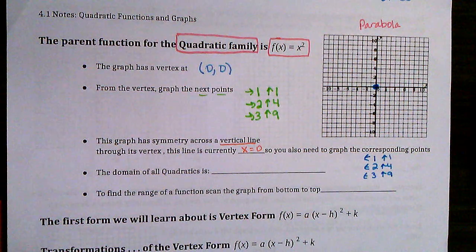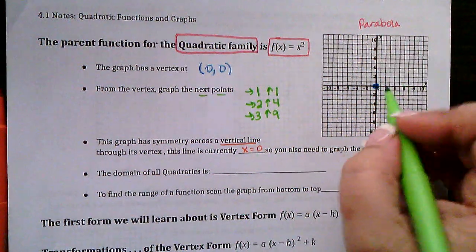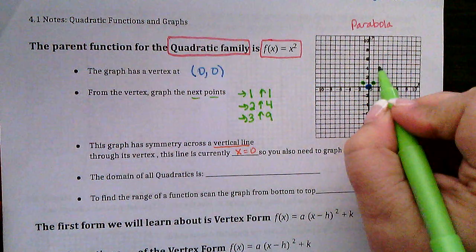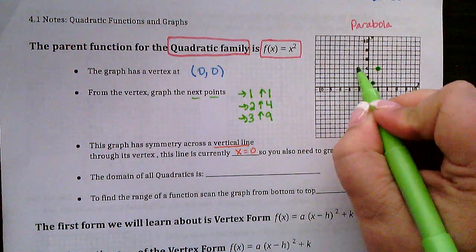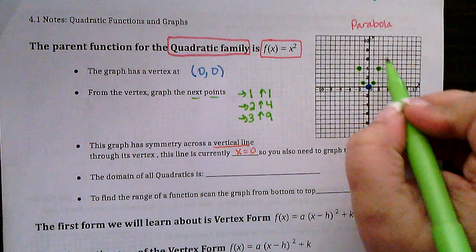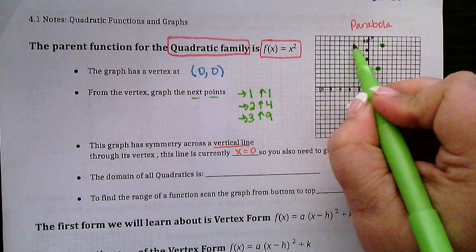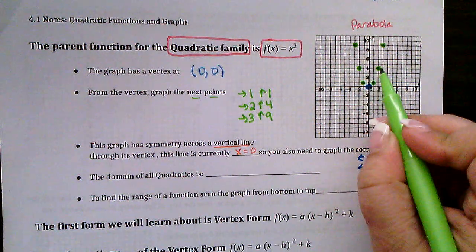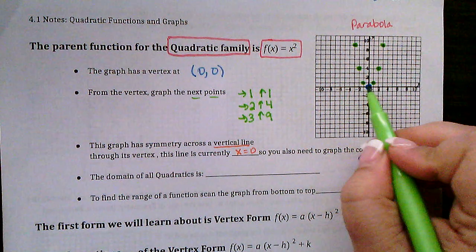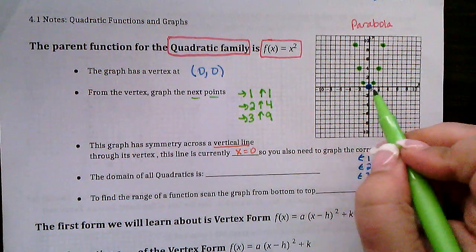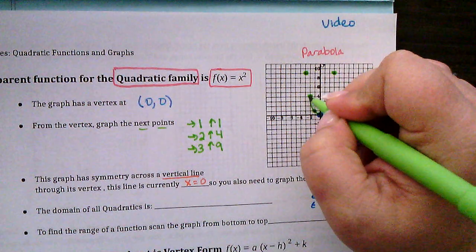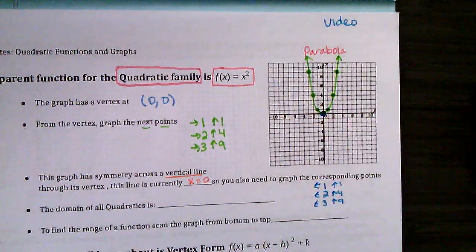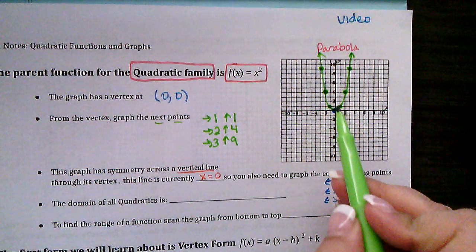So here is our quadratic — over 1 up 1 on both sides, over 2 up 4 on both sides, and over 3 up 9 on both sides. Remember, you always have to start back at the vertex: over 1 up 1, back to the vertex; over 2 up 2, back to the vertex; over 3 up 3 on both sides. You always start counting from the vertex. Then we draw it in — this should look like a U with a nice rounded bottom at the vertex, not a point like the V had.